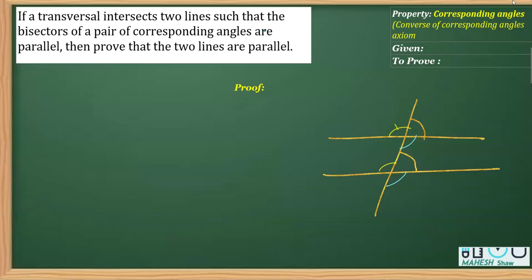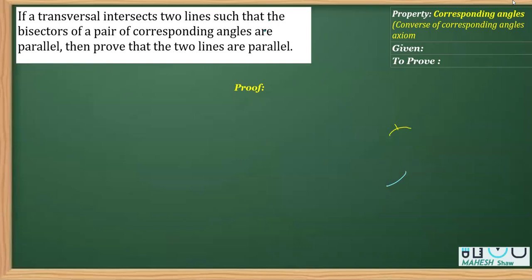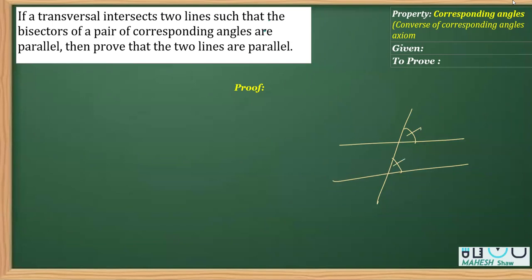Likewise, this angle is equal to this angle. These are called corresponding angles. The converse states that if you prove any one pair of corresponding angles as equal, then the lines are parallel.